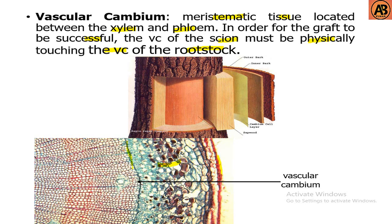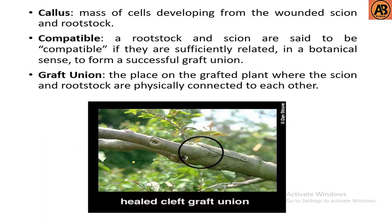Here we can see in the picture: this is bark, this layer is phloem, this thin layer is known as vascular cambium, this is xylem, and this portion is the woody portion. The vascular cambium is very important for formation of new xylem and phloem.